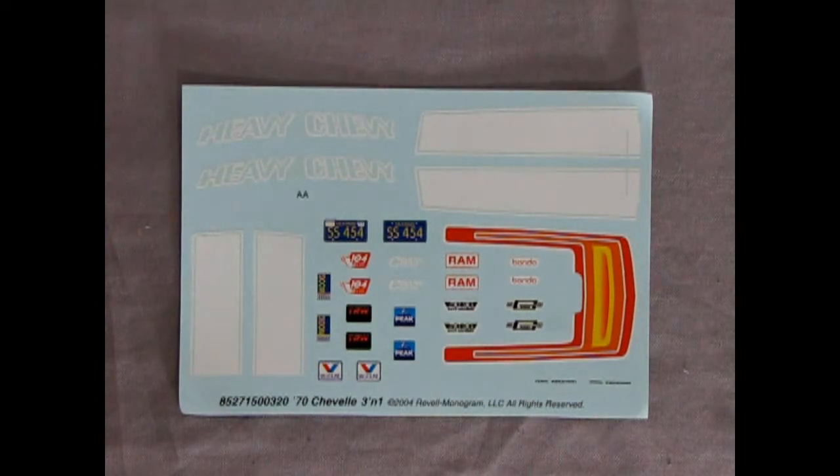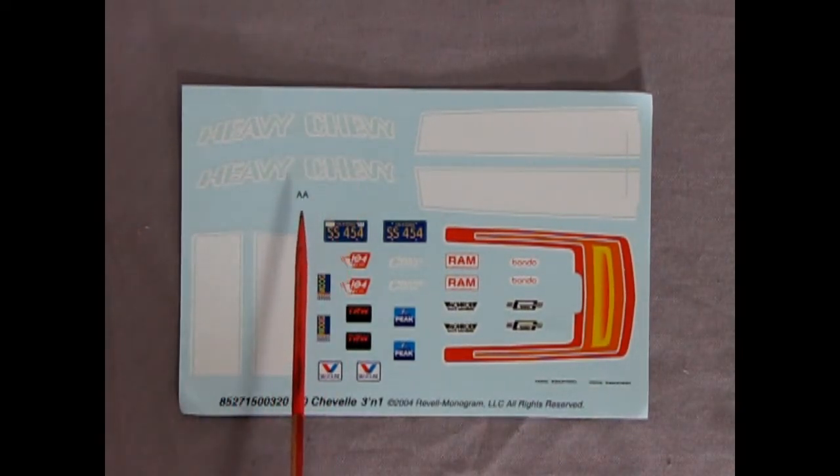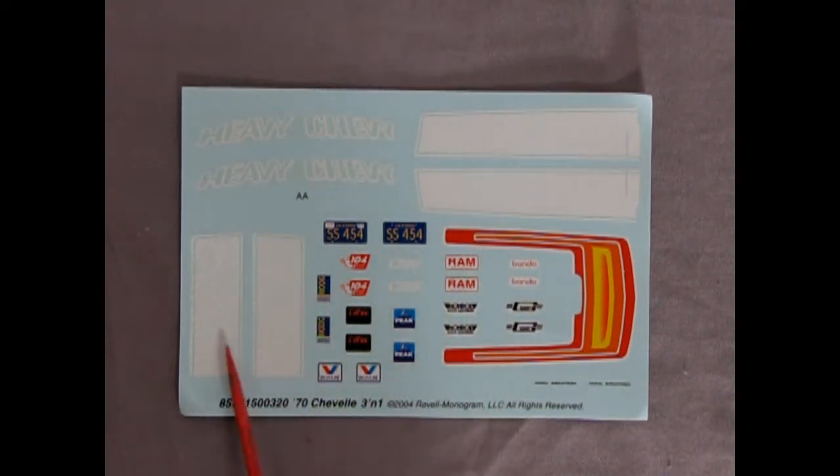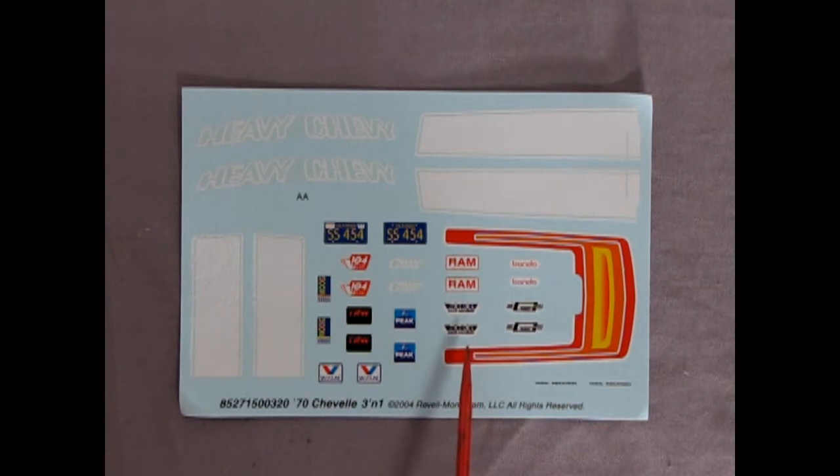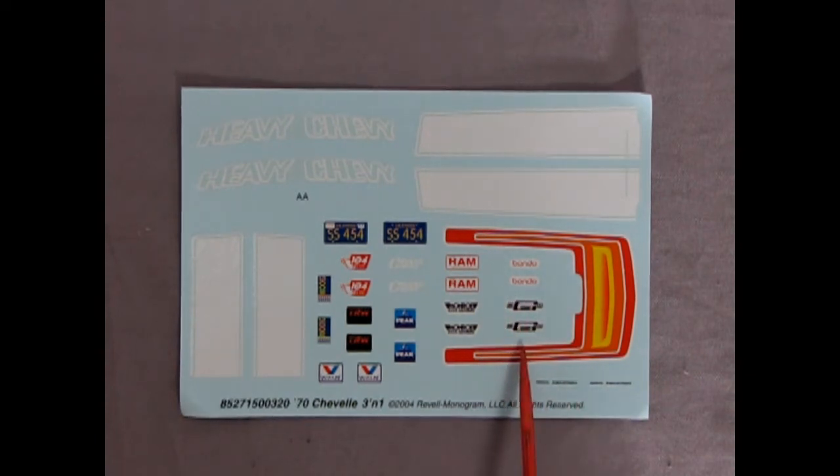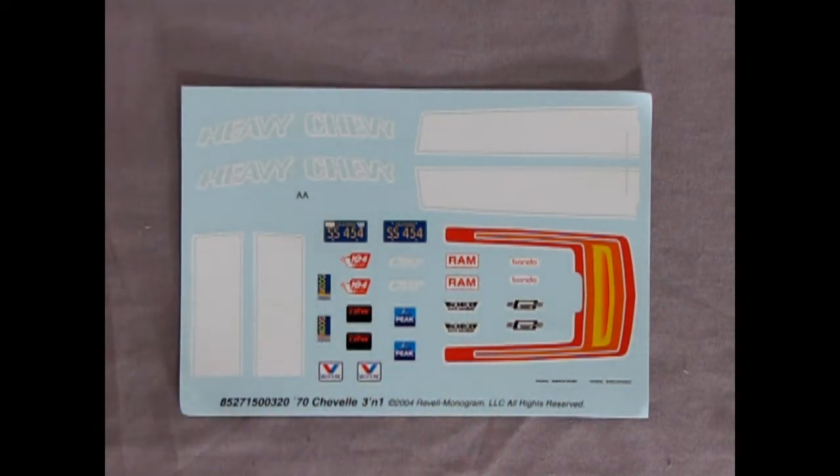And finally we have our nice decal sheet with the Heavy Chevy for the rear quarter panels. Then we've got our nice white stripes on there. As well as SS-454. This sort of rainbow effect hood decal for the street machine. It's even got the little notch where the blower will be popping through. And then for Drag Racer we have all the sponsors. Valvoline, Moog, TRW, 104, Crane Cams, Ram, Monroe Shocks, Bondo. Use a lot of Bondo in your Chevy. And then Mr. Gasket I believe. So that's what we have there for our decals.